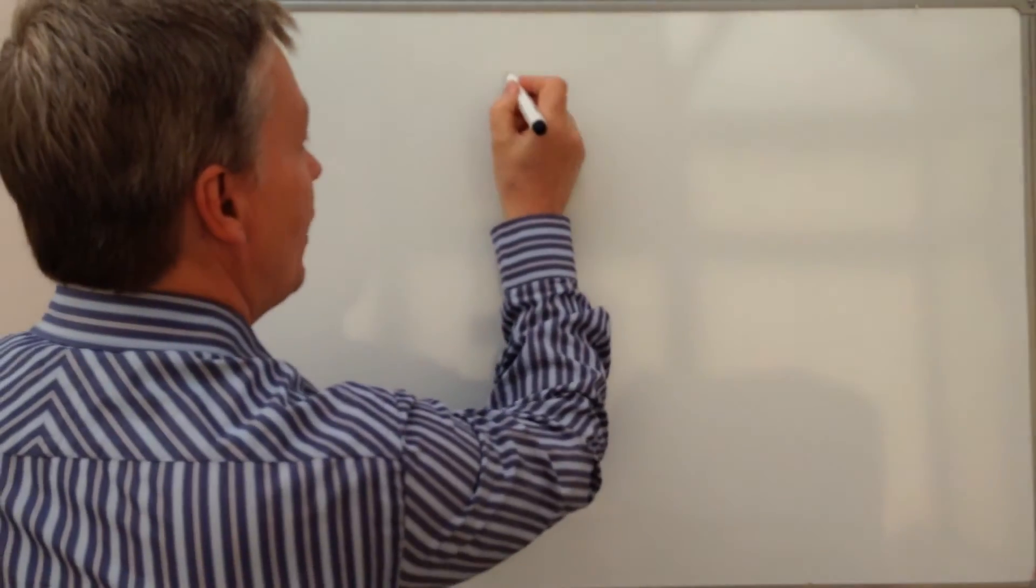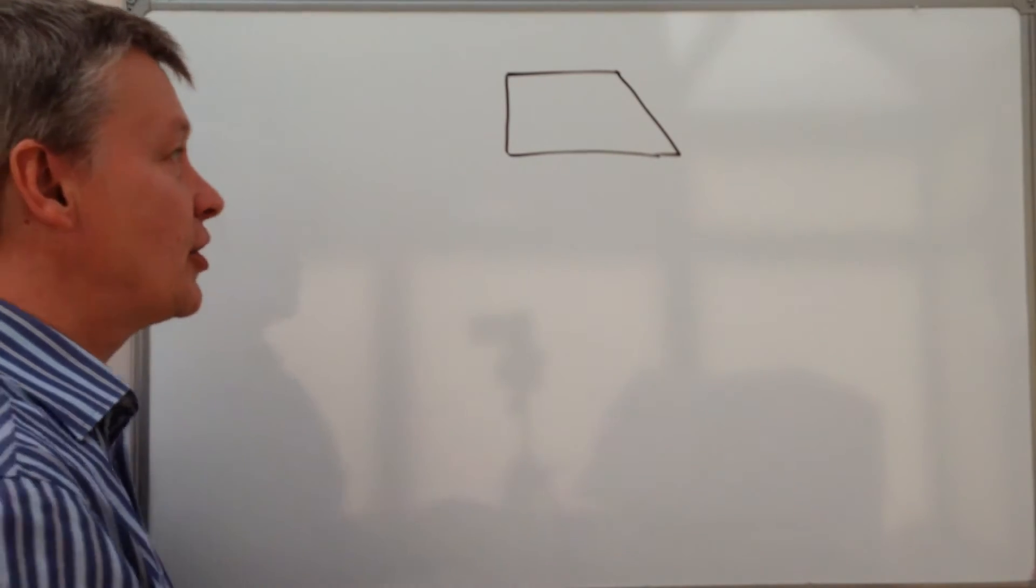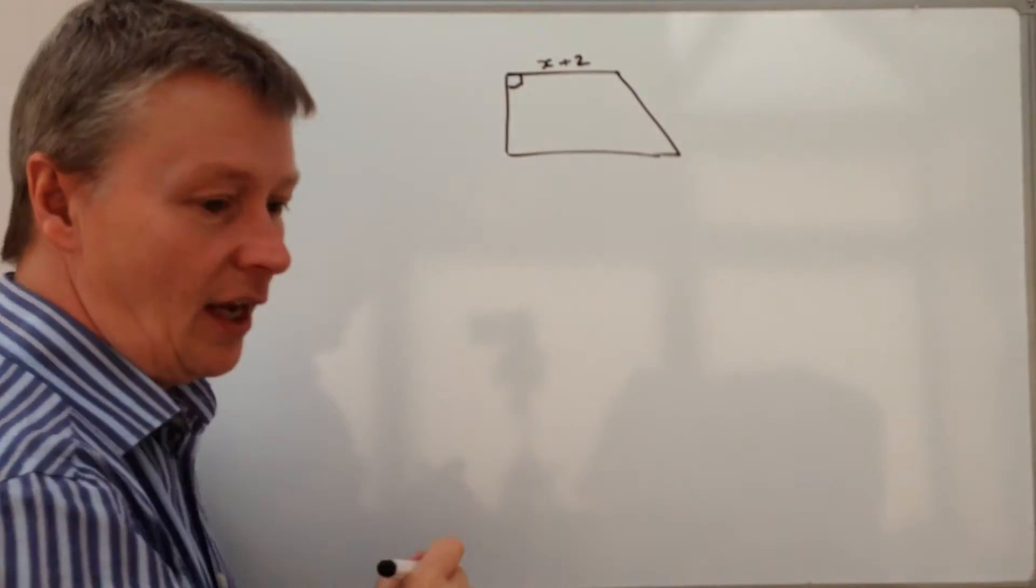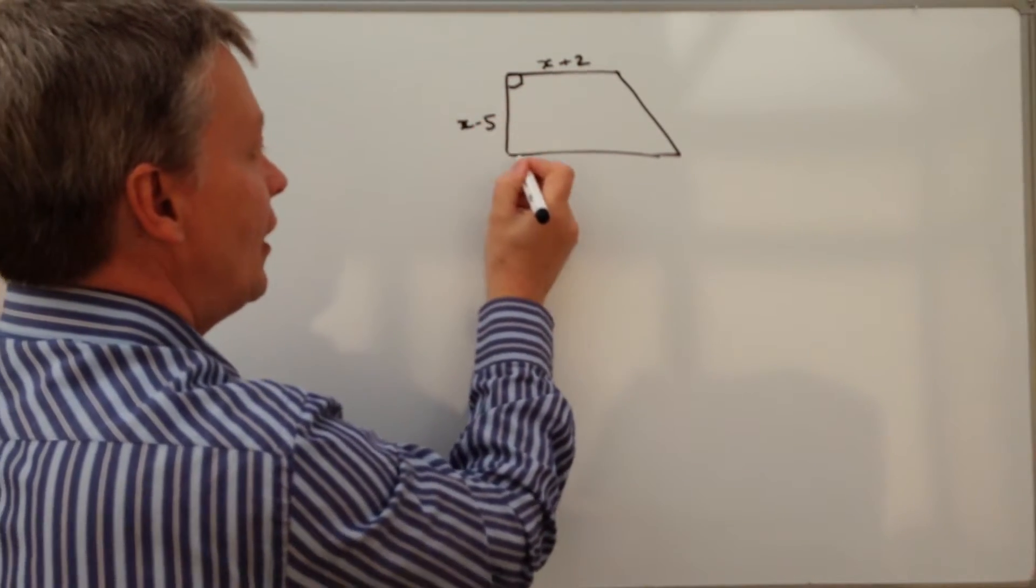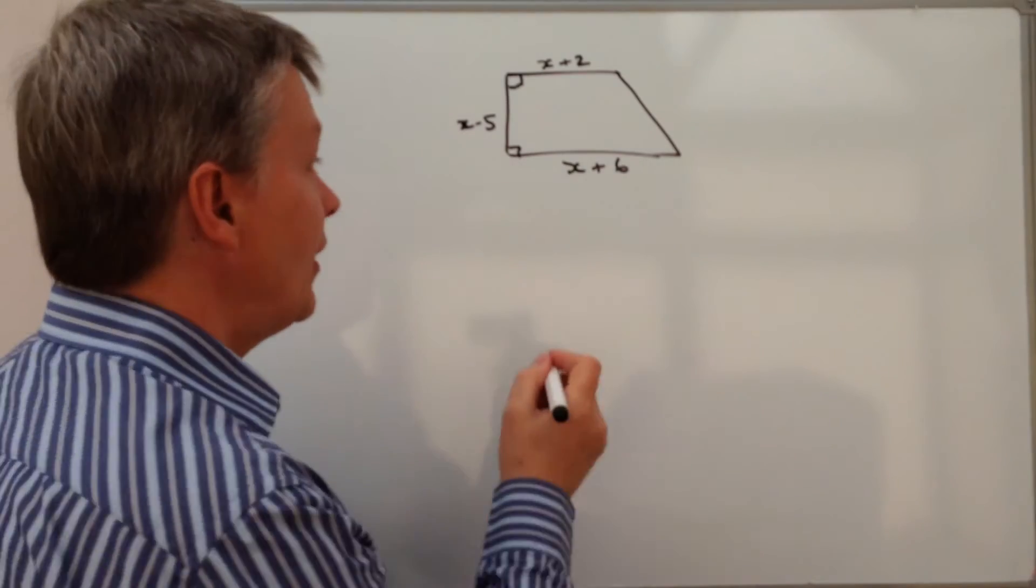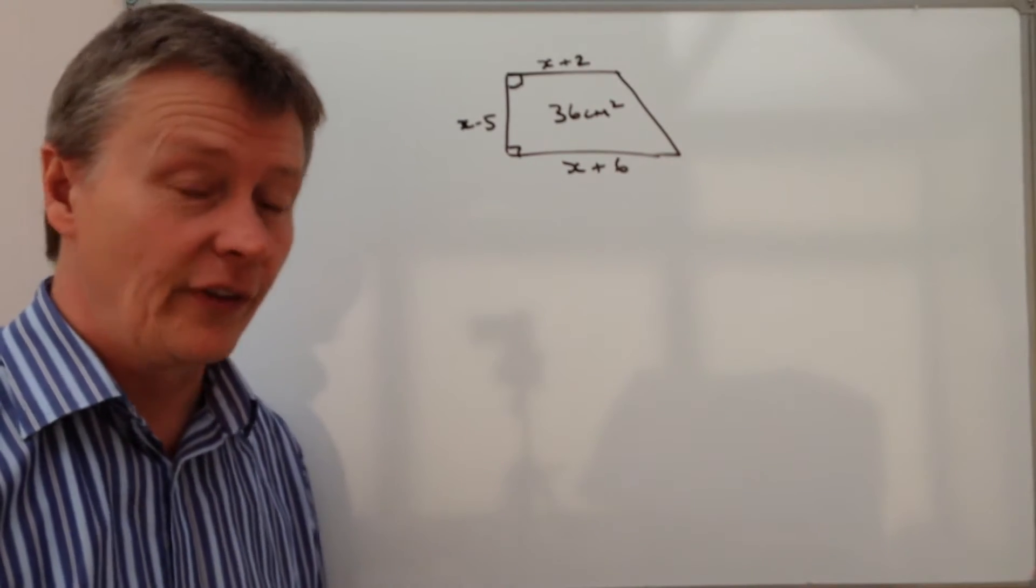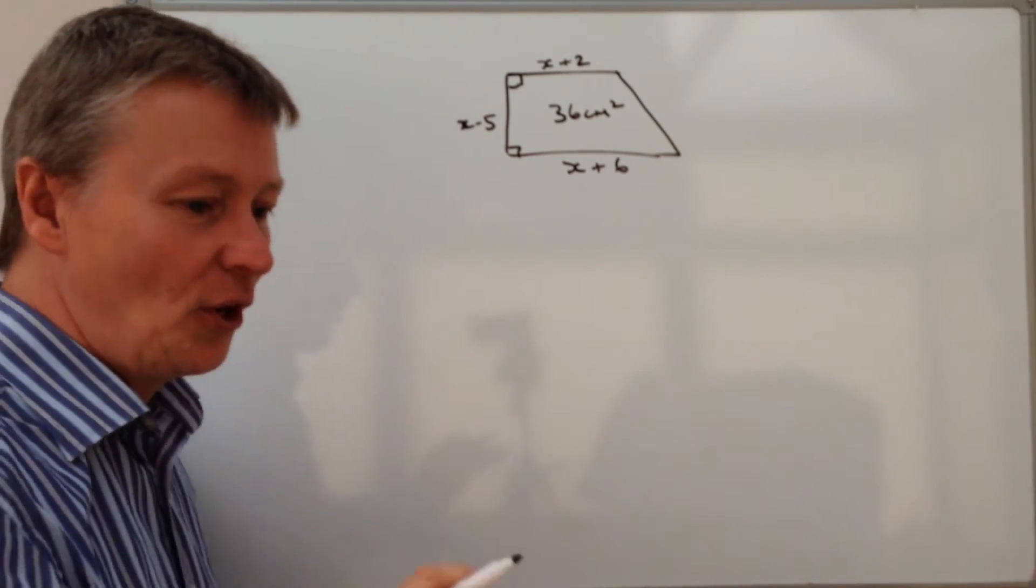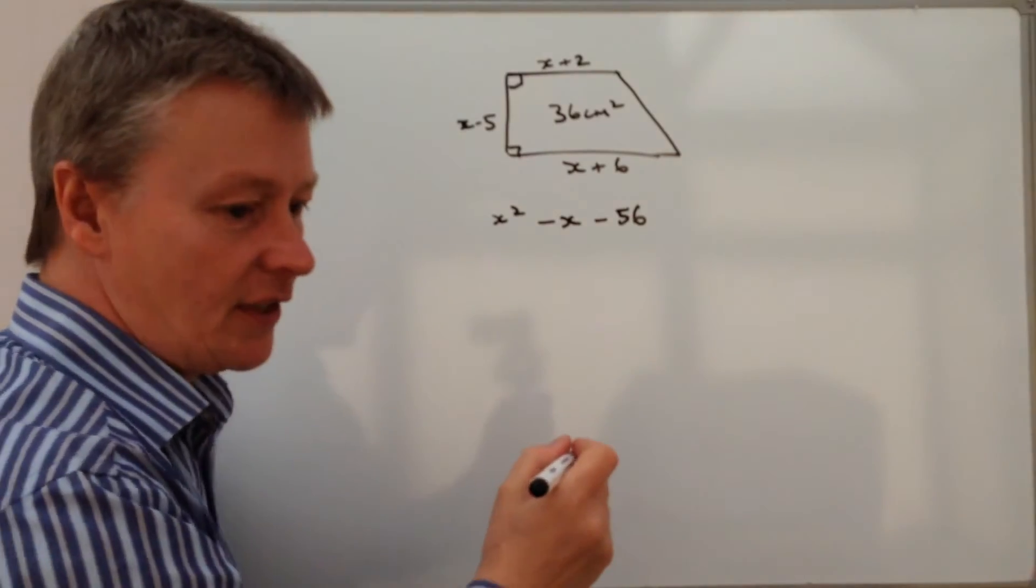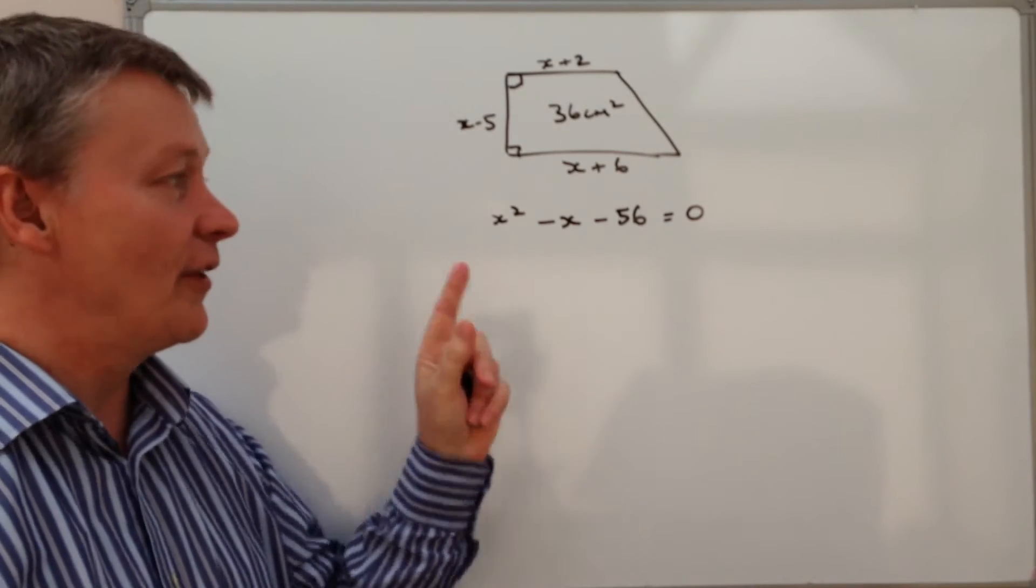So this particular question deals with an area of a trapezium. A trapezium is a four-sided shape, and we're told this is x plus 2, right angle there, and this is x minus 5, right angle, and this is x plus 6. We're told that the overall area of this trapezium is 36 centimeters squared, and we're being asked to prove or to show that x squared minus x minus 56 equals 0 must be true for this trapezium.